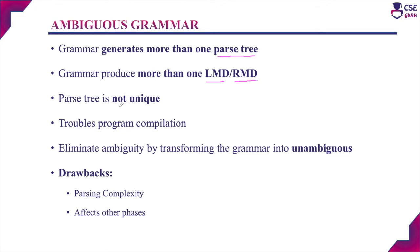Ambiguous grammar cannot produce a unique parse tree. There is no specific technique or method to identify whether the grammar is ambiguous or not. If you allow ambiguous grammar, it actually troubles the program compilation. So, before parsing, we need to identify whether the grammar is ambiguous or not.